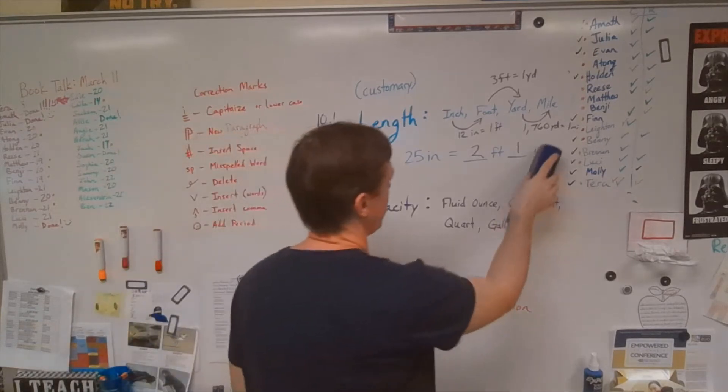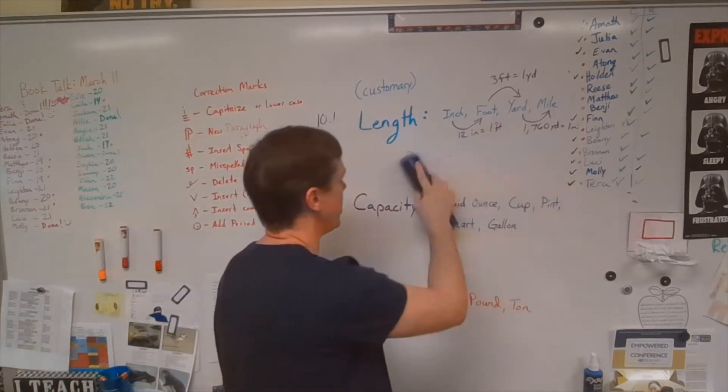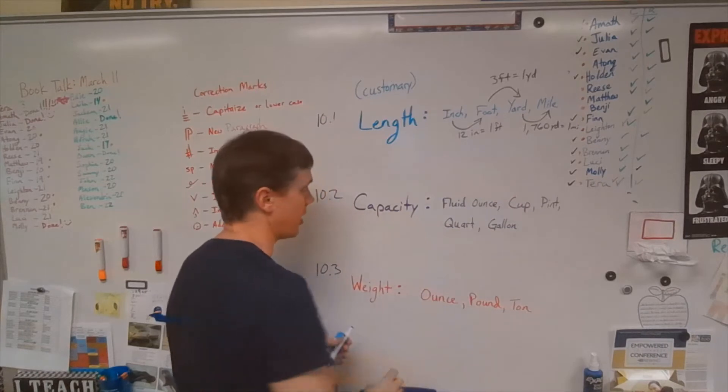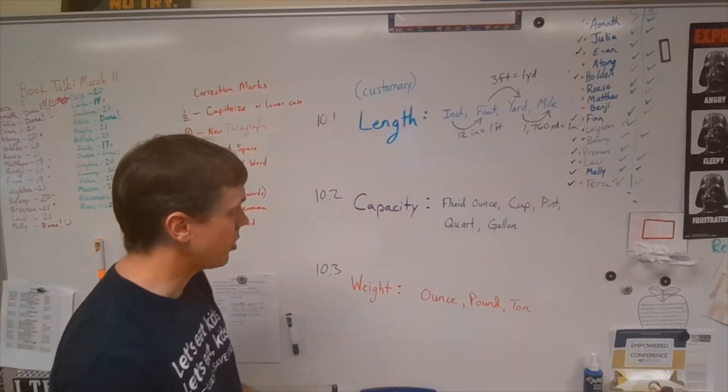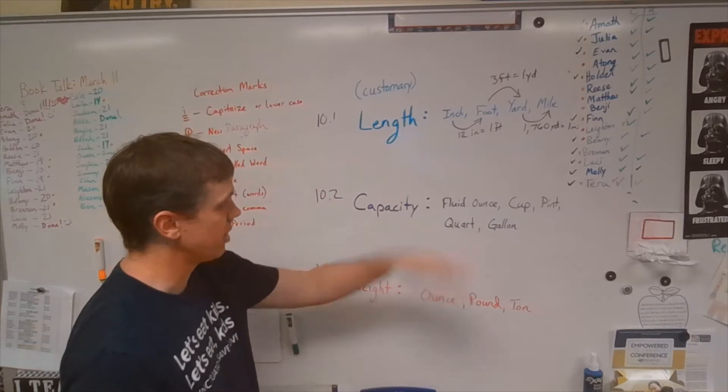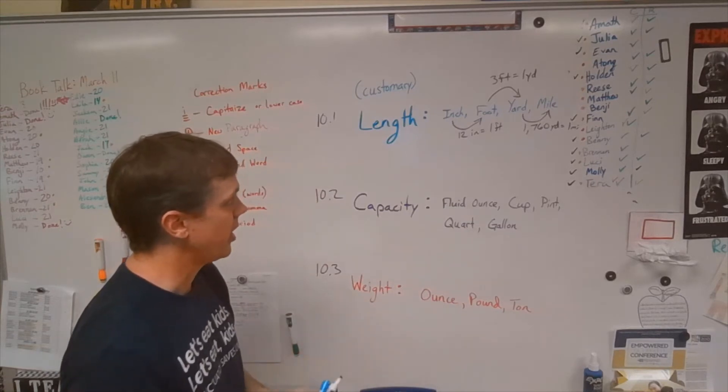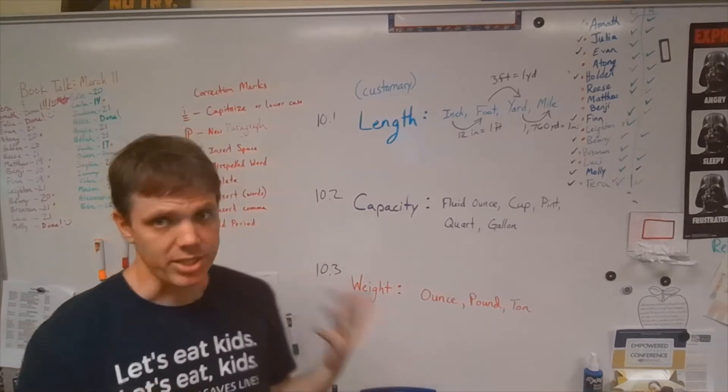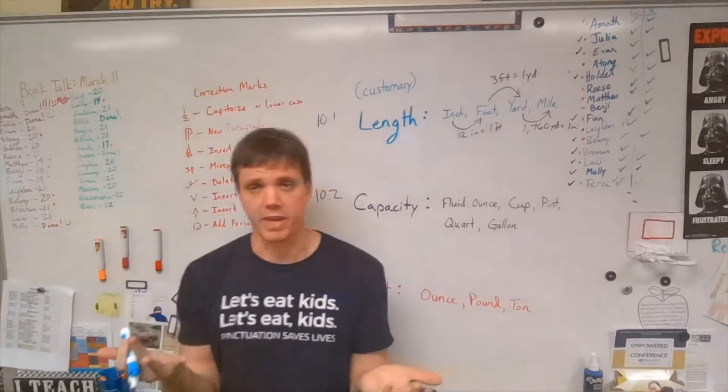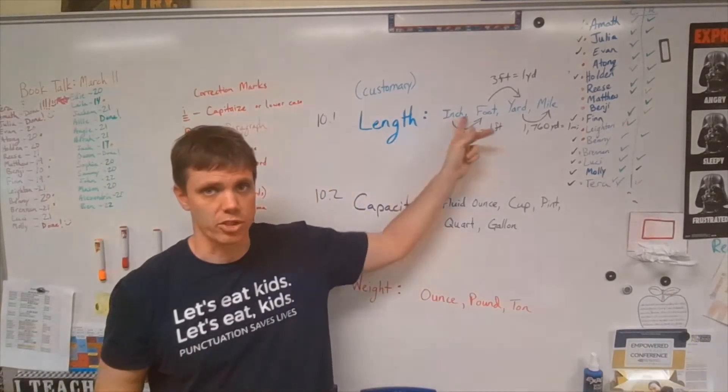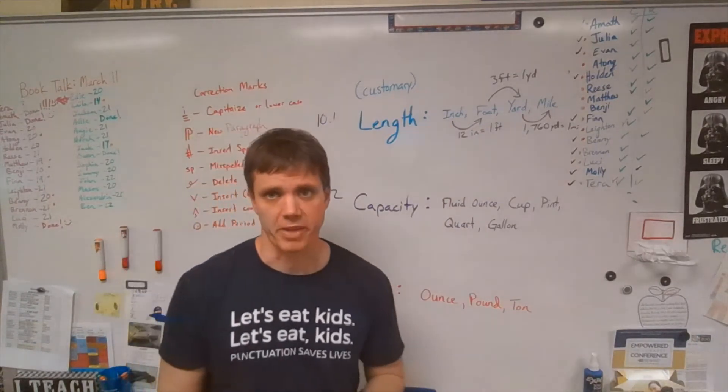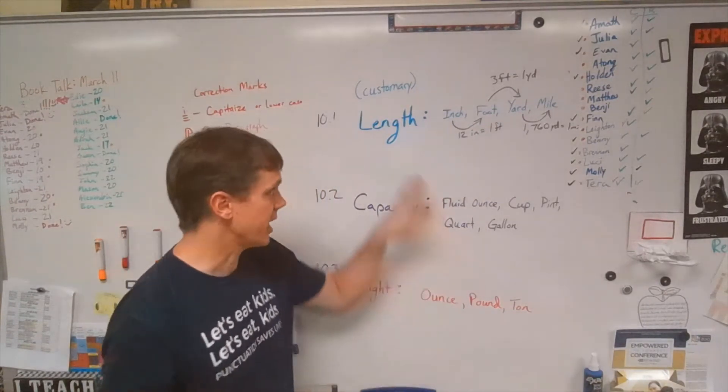All right. I think that's just about the most confusing thing on there. Obviously, I think for the most part, they don't give you like you have so many miles. How many feet is that or anything like that? Though they might say that you have some number of feet and how many miles is that? That's possible. Anyway, basically you're just going to always be either multiplying or dividing by your conversion factors here. They won't call them conversion factors, but that's what they are. All right. So that's length.